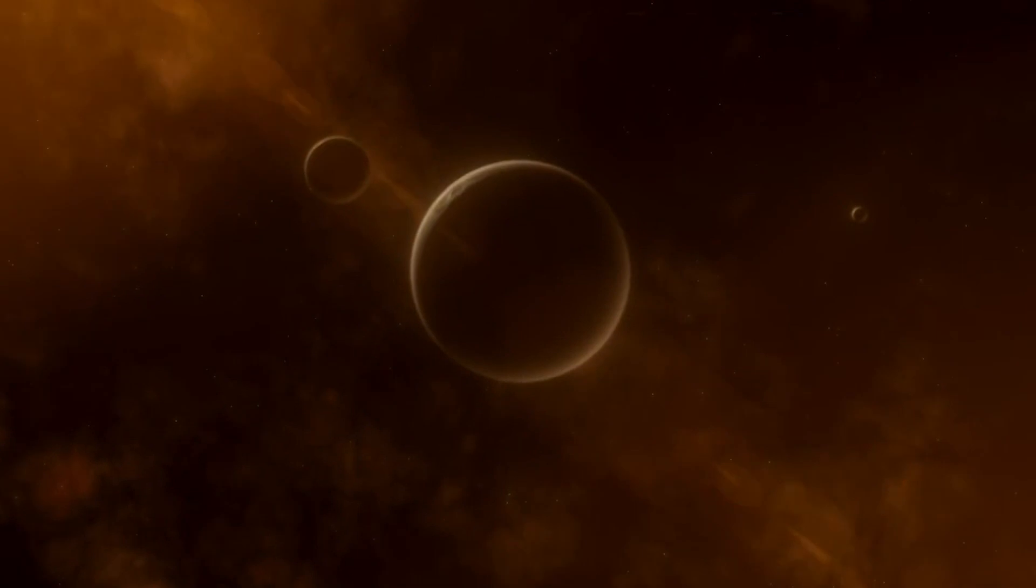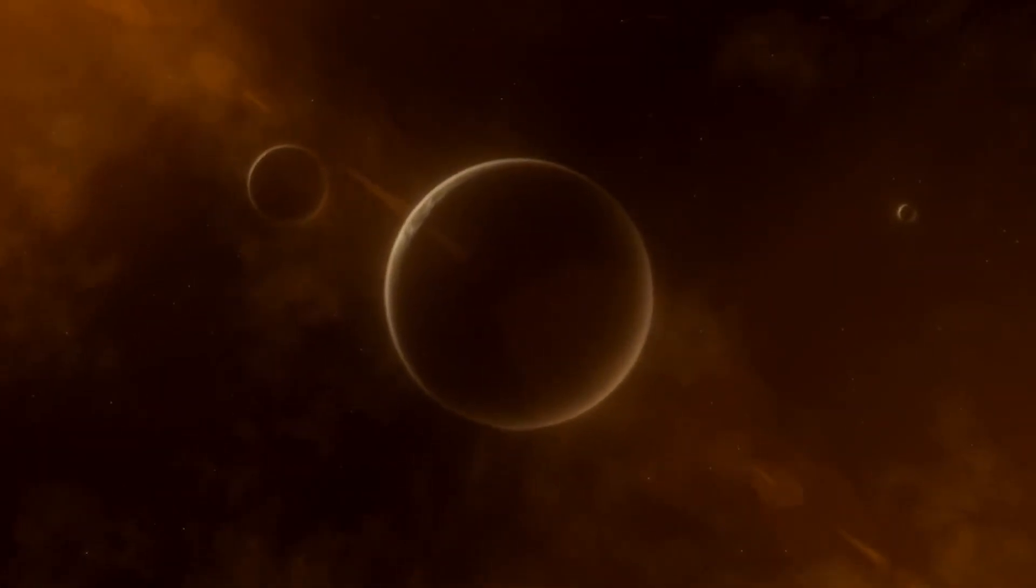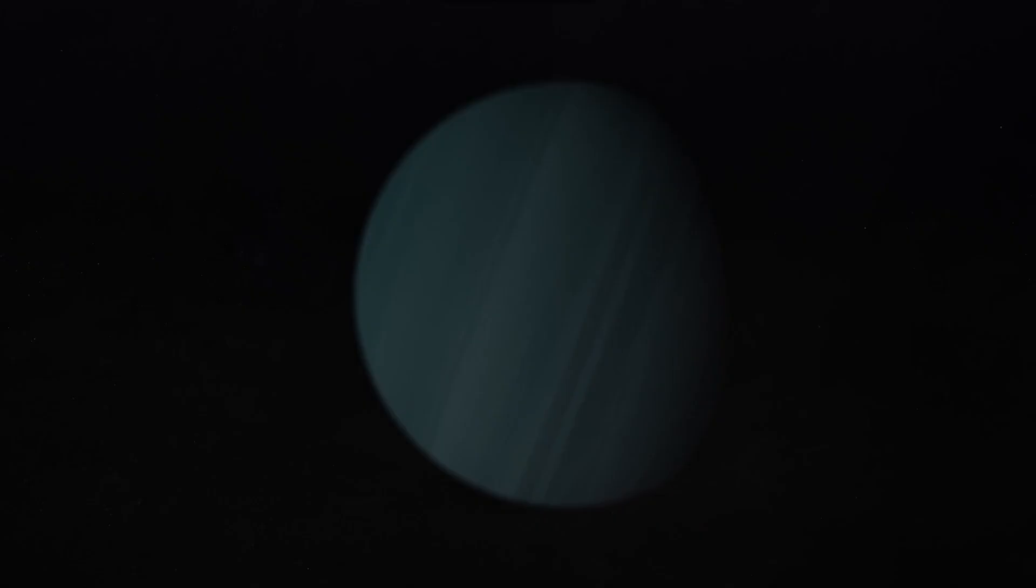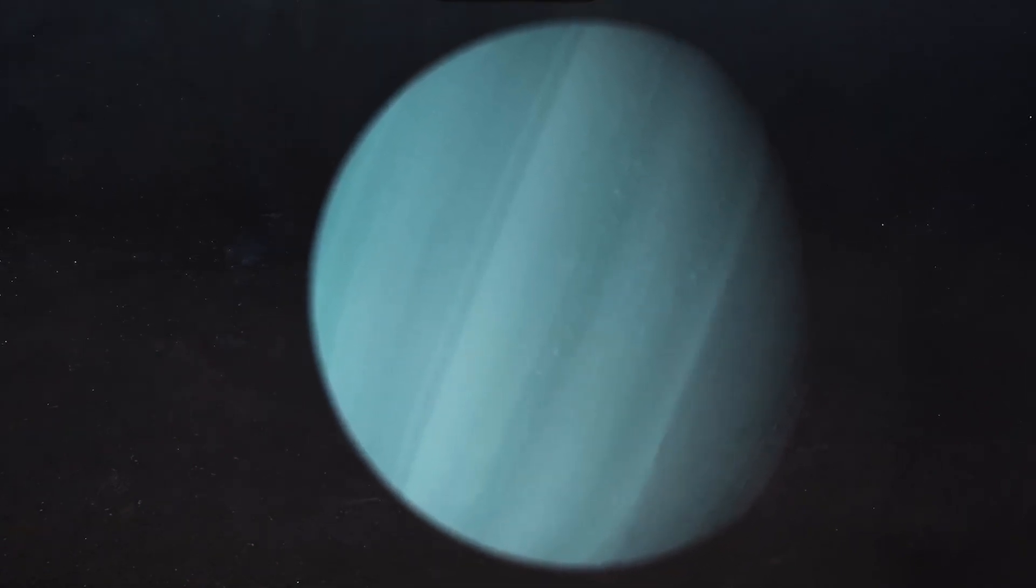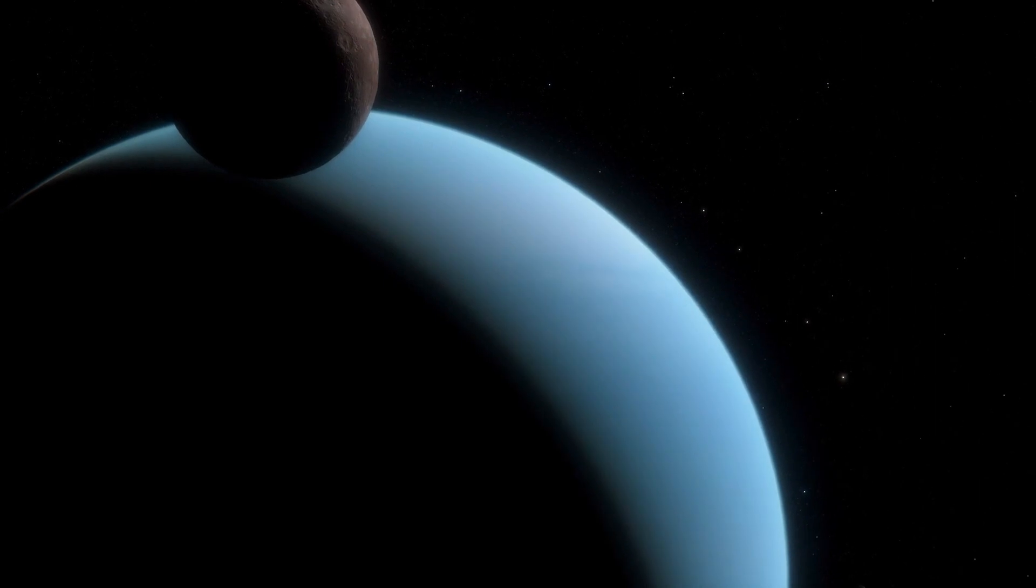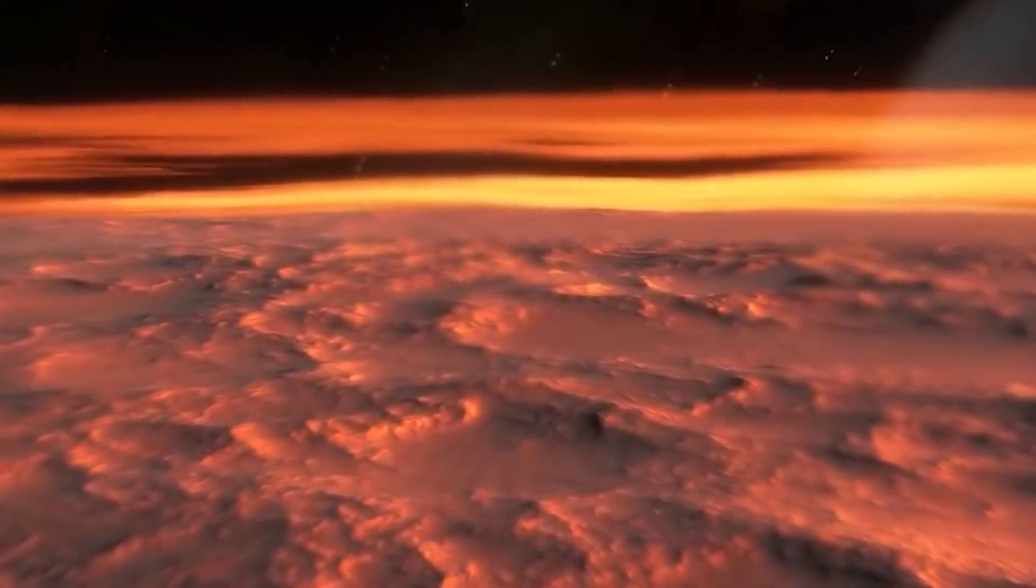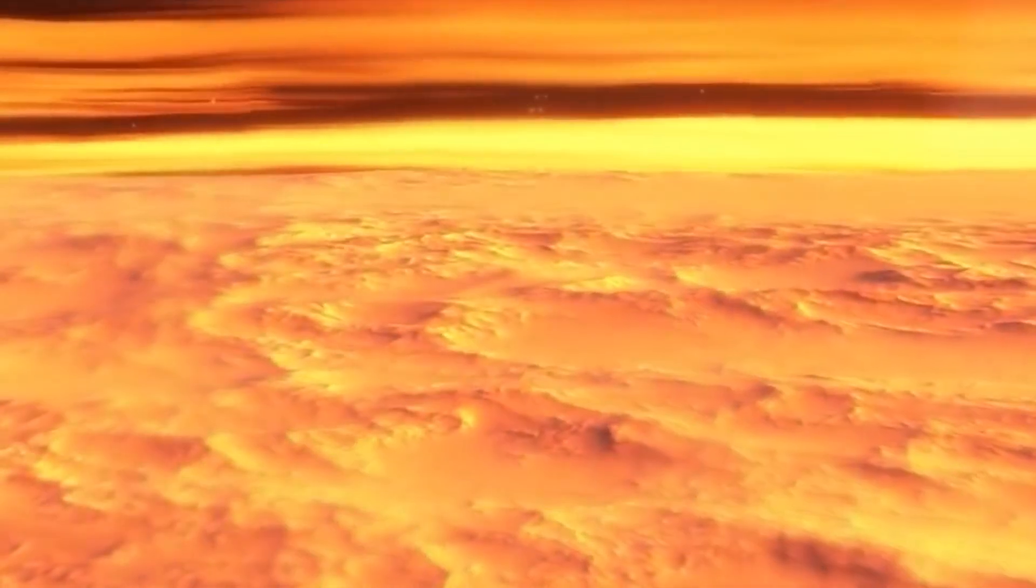Similar to Neptune, Saturn and Jupiter release two times the amount of heat they receive from the sun. However, Uranus stands out as an exception. It lacks any significant internal heat source and primarily relies on solar heat. Therefore, it doesn't warm up like Neptune and the other gas giants.